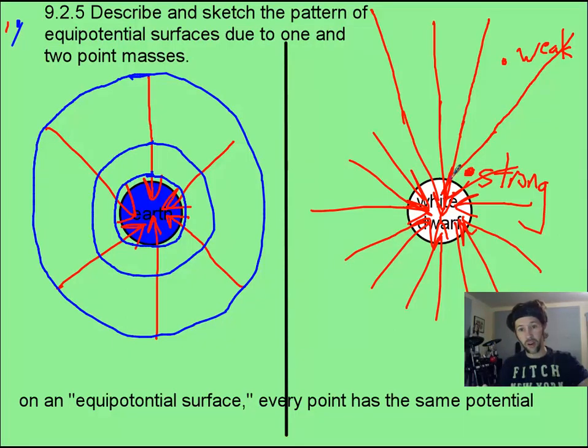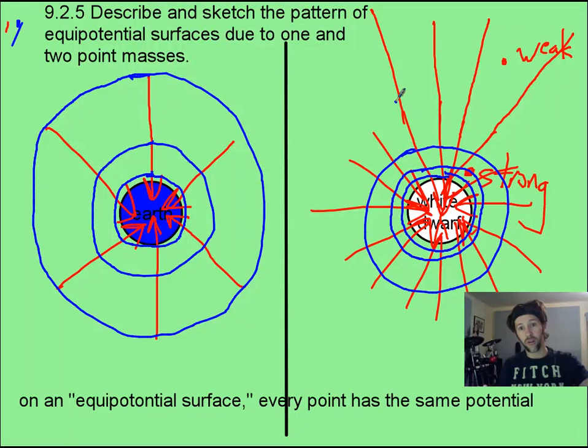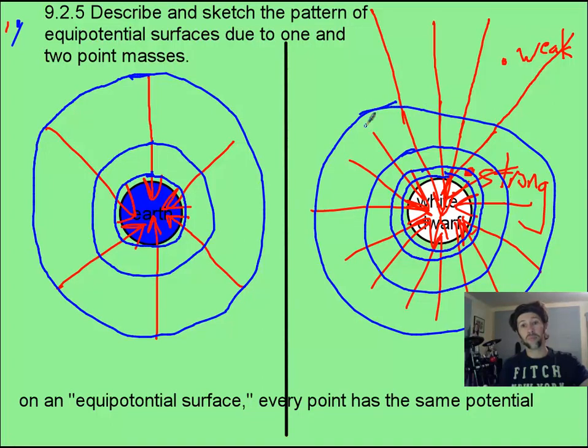Now if we did the same thing around a white dwarf star, the pattern would still be circles, but they'd be changing a lot quicker. So I would need to draw them not spreading out as fast as they would around Earth. This would need to be more extreme than I'm making it, but I think you get the idea.